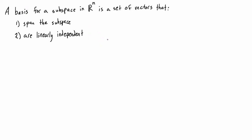So if you imagine that we had a one-dimensional subspace — basically just a line — then we would only need one vector to describe that span, because any scaled up or scaled down version of that one vector will give us every other point on that line. If we think about a basis for a two-dimensional subspace, a two-dimensional subspace would be a plane, and we only need two vectors to describe any point on the plane. If they were parallel, they would be linearly dependent because one would be a scaled version of the other.